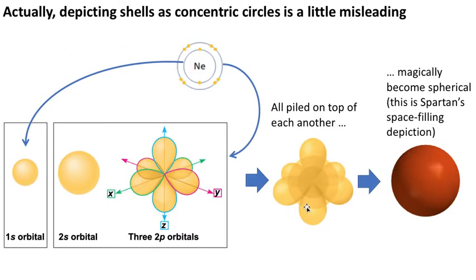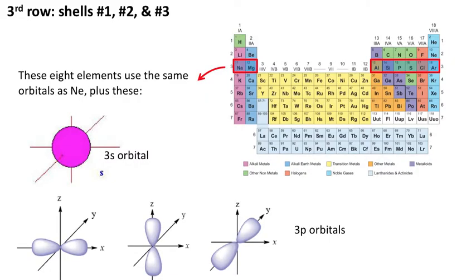I need to have a little caveat here that depicting shells as concentric circles is a little bit misleading. Going to neon, which has two electrons in the first shell, eight electrons in the second shell for a total of ten electrons, so there's two here, two here, and then a total of six here, those are the 2p orbitals. The fact is they're all piled on top of each other, so it's not really concentric rings, it's really a big old dense ball of electrons, but it's still convenient to write them as those concentric circles.